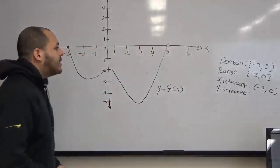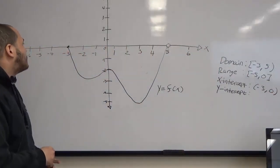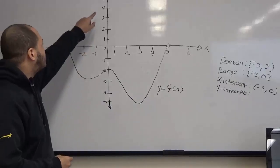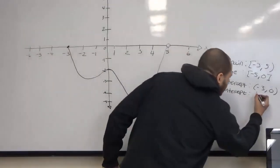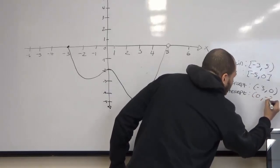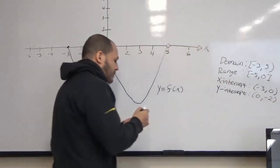That's our coordinate for our x-intercept. To find our y-intercept, again, we just look at our y-axis. This is where the graph intersects. We have 0, negative 2. And that's our coordinates. Thank you.